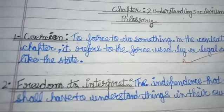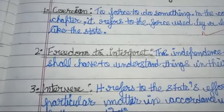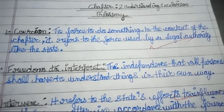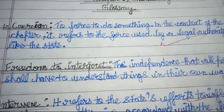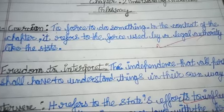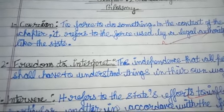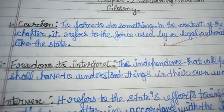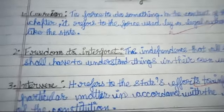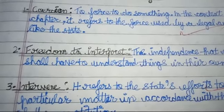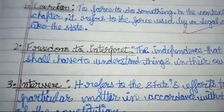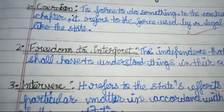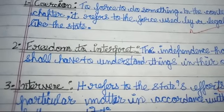The next definition is freedom to interpret — the independence that all persons shall have to understand things in their own way. It means everyone has the freedom to think and understand in their own way. In the context of this chapter, it refers to a person's liberty to develop their own understanding and meaning of the religion they practice.